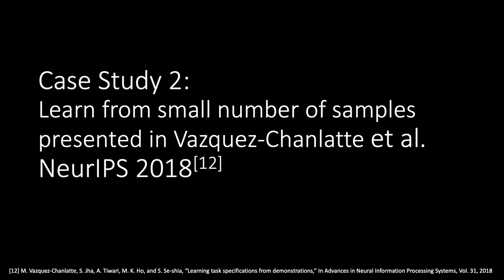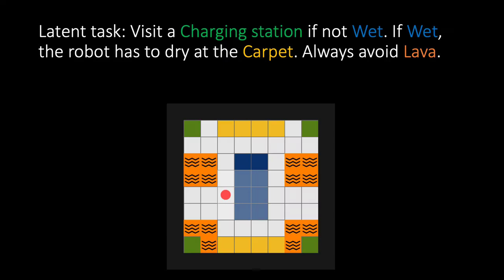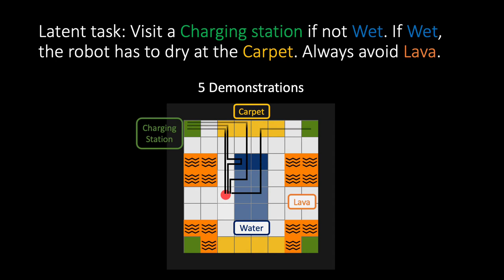In the next case study, we will learn the specification of a task from a small number of samples presented in the following paper. We now have a new environment where the latent task is to visit a charging station if not wet. If wet, the robot has to dry at the carpet and always avoid lava. Green is the charging station, yellow is the carpet, blue is water, and orange is lava.